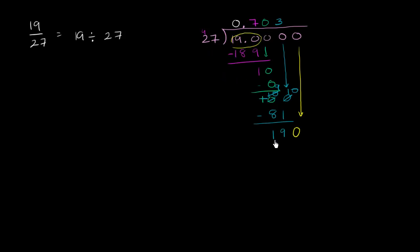So 27 goes into 190. We already played this game. It goes into it 7 times. 7 times 27, we already figured out, was 189. We subtract. You have a remainder of 1. Then we bring down another 0.